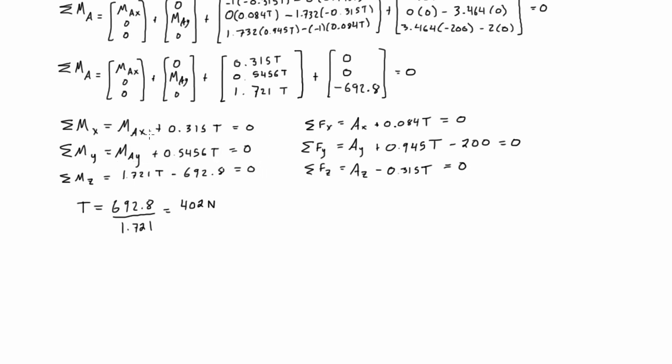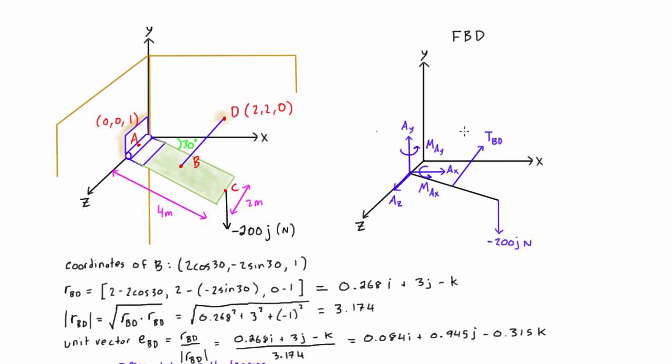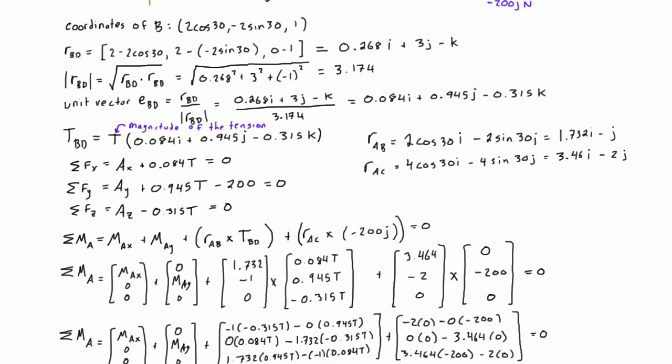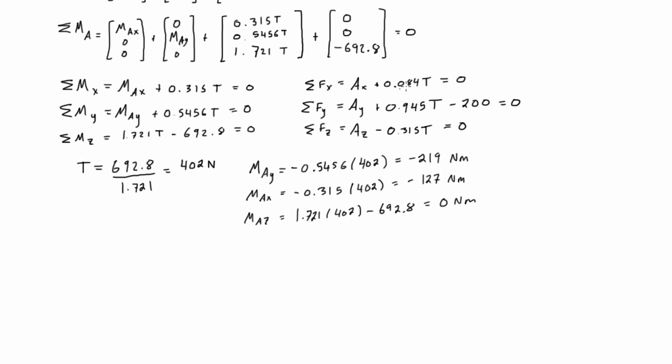Now that we know the tension is 402 newtons, we can plug that back into all these equations and solve for MAy and MAx. MAz turns out to be zero. If you do this exactly, it's not exactly zero, but that's just because of some of my rounding. That's good because we don't want that moment appearing about the z axis, because this hinge wasn't capable of providing a moment about the z axis.